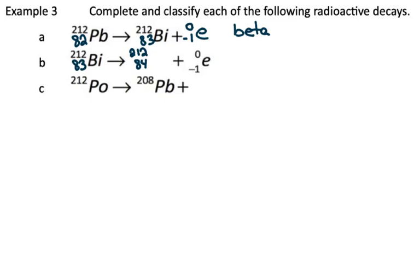Looking at the periodic table, the element with an atomic number of 84 is polonium, P-O. As for whether this is alpha or beta, we can see by the electron that is decayed, this is a beta decay.